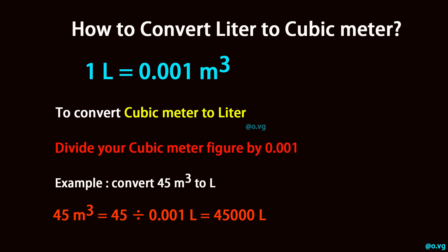Example: convert 45 cubic meters to liters. 45 cubic meters equals 45 divided by 0.001 L, which equals 45,000 L.